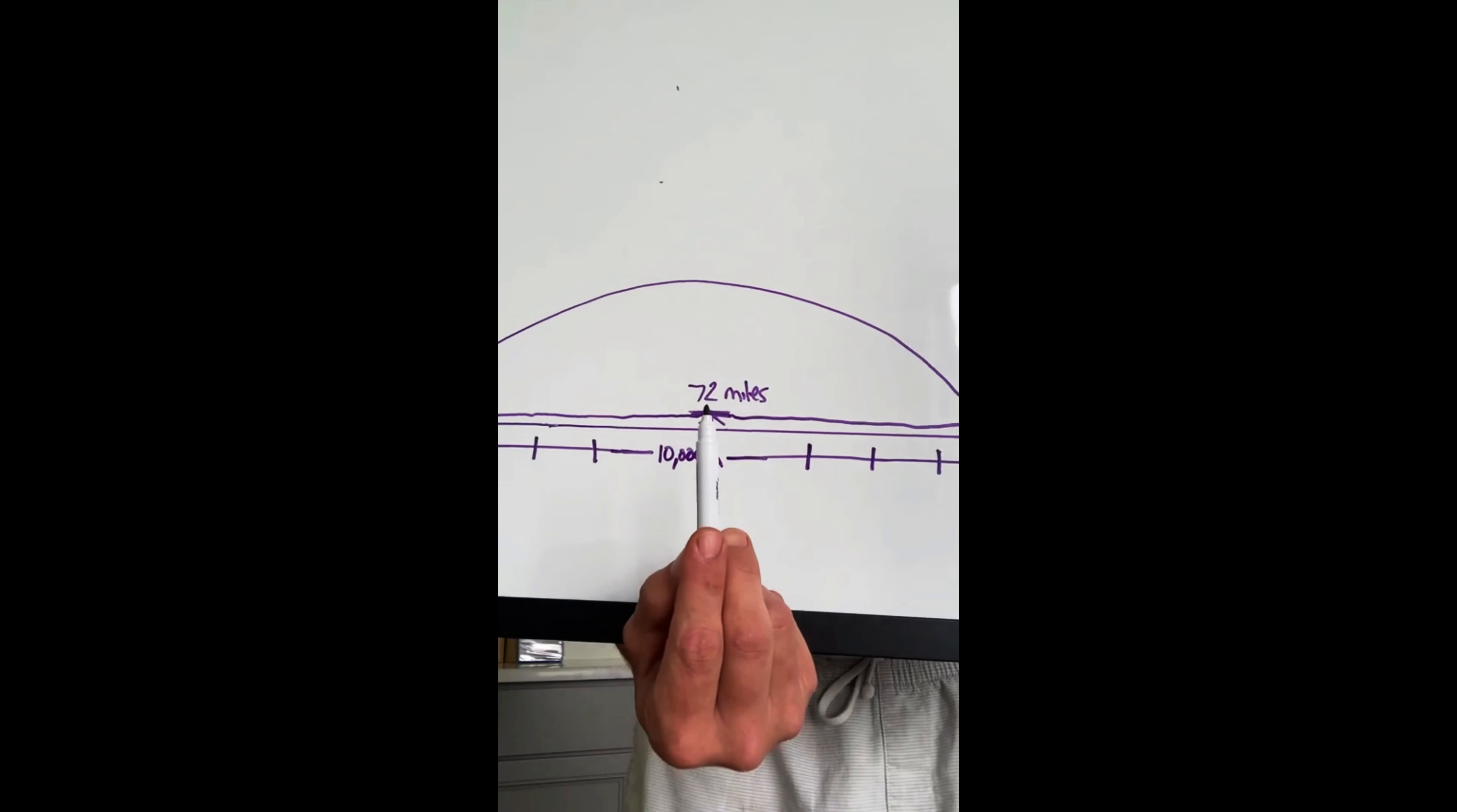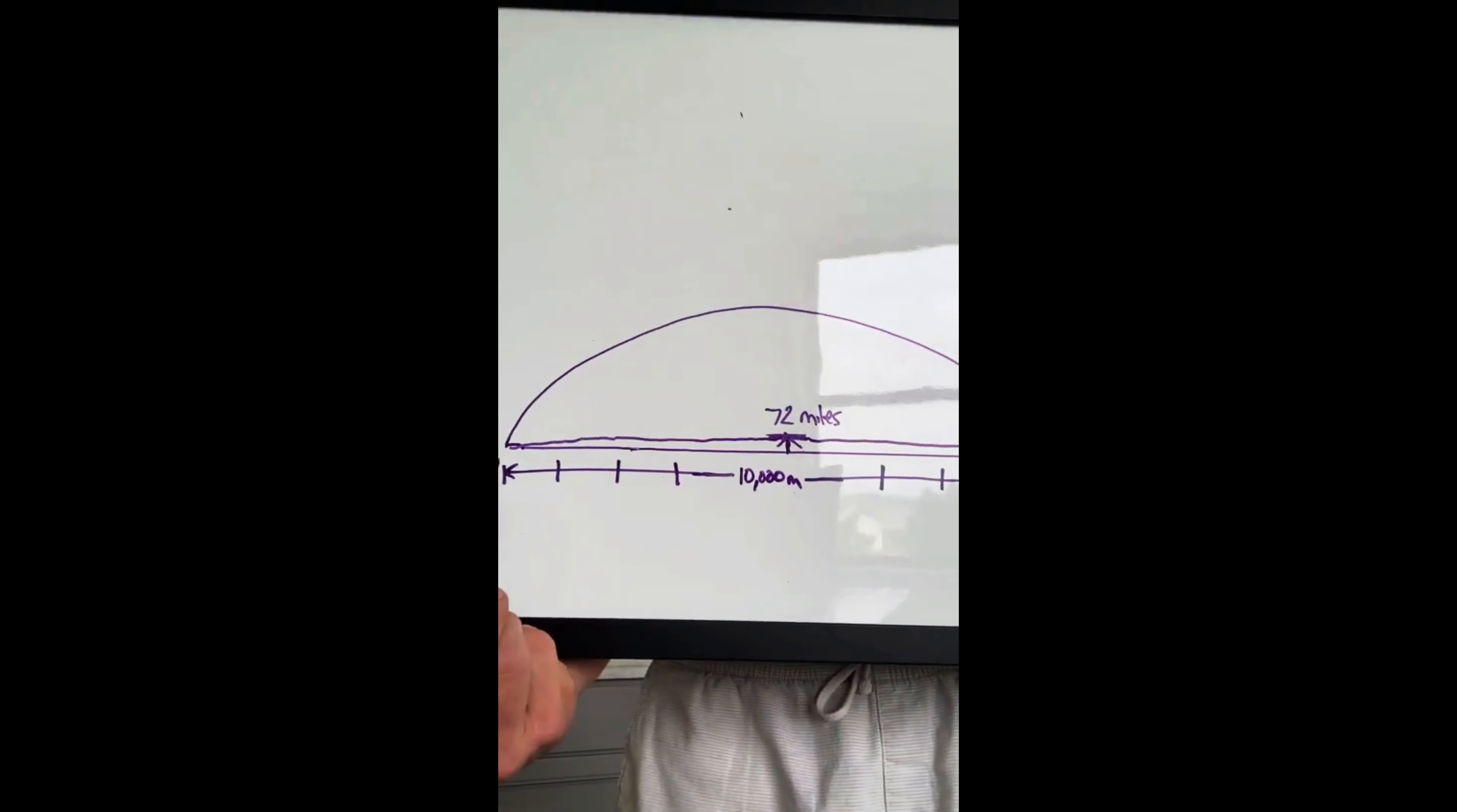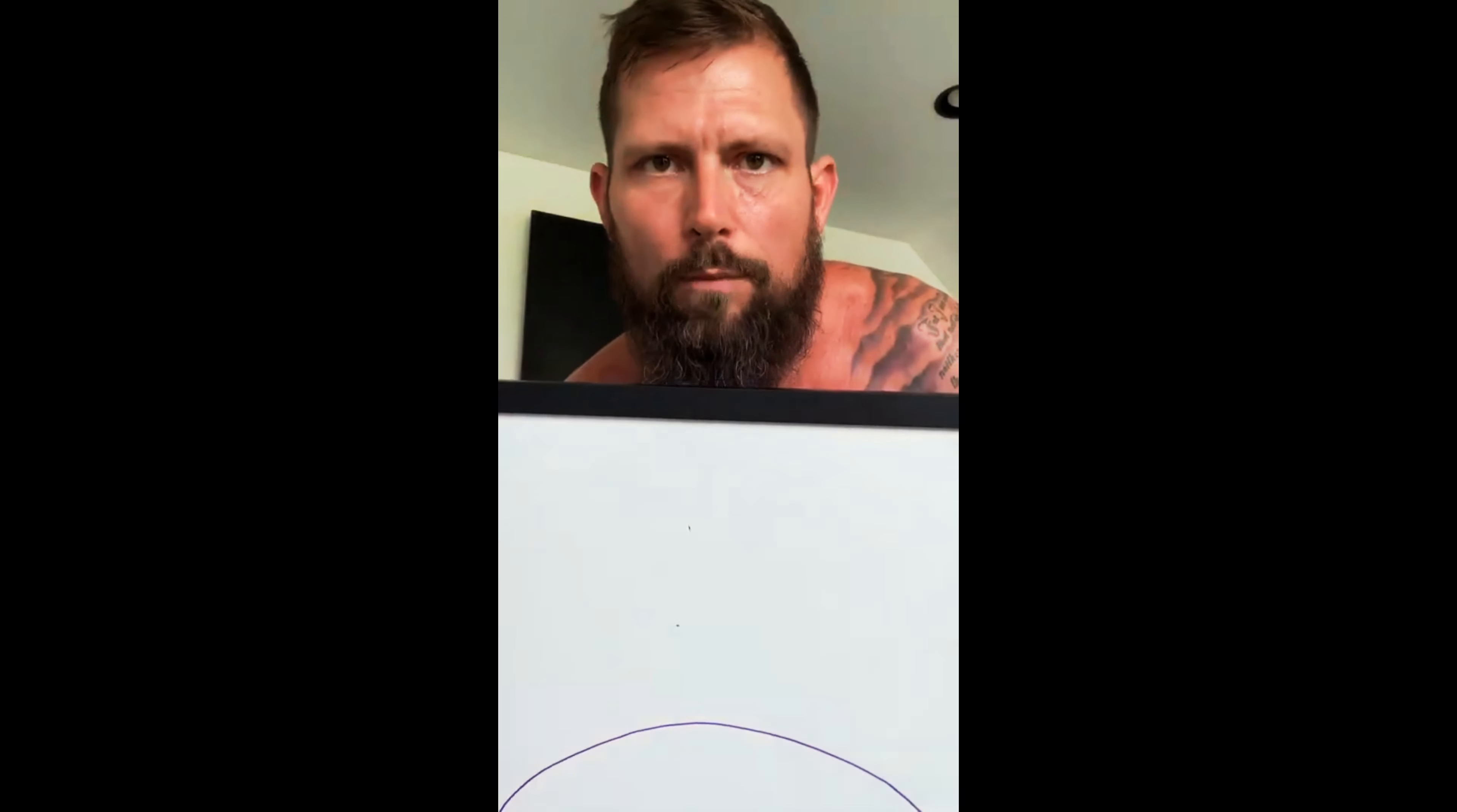That ceiling is not high enough to touch the ground somewhere out here 5,000 miles this way and 5,000 miles this way to touch the ground somewhere. That means out here the ceiling would only be a few miles tall, you stupid fucking snow globe tards.